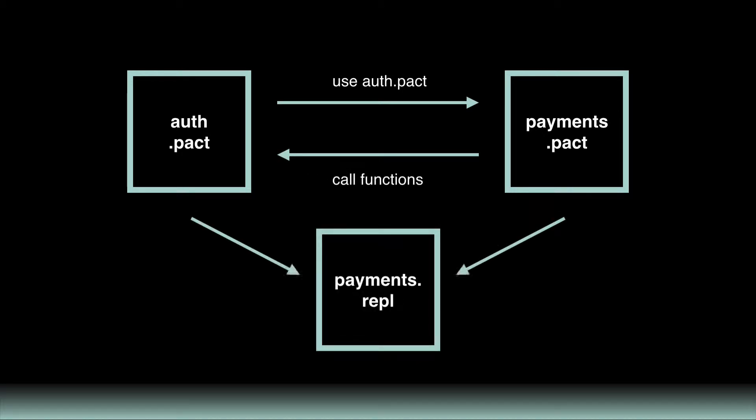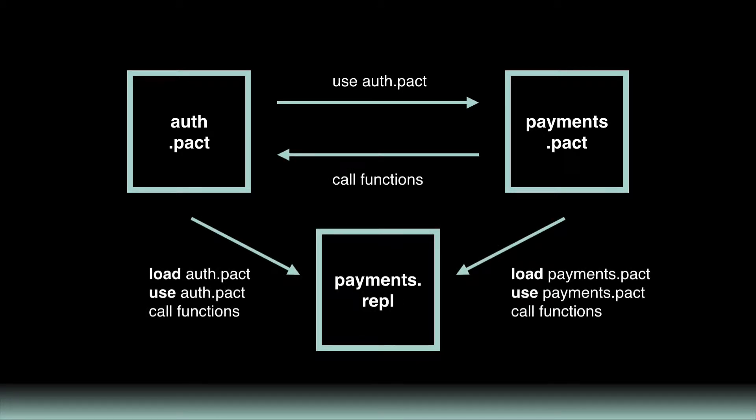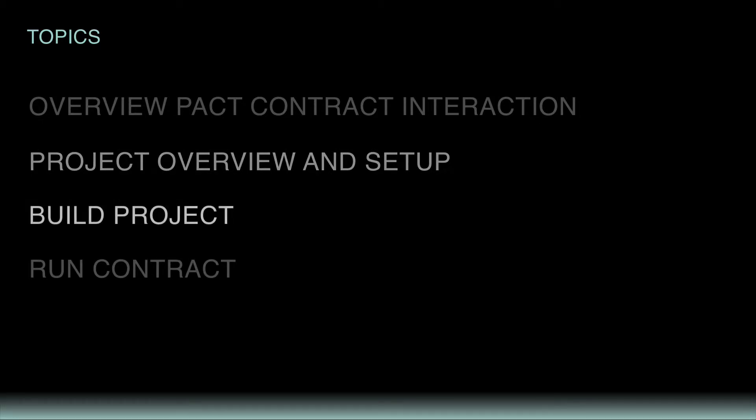Let's get started on the project. Take a look at this visual overview. This provides a summary of each of the features you'll be creating for the Pact Contract Interaction project. Notice how similar it is to the example shown earlier. The goal of this project is to write a function in auth.pact to use within payments.pact. The payments.pact file will then use the auth.pact file to call specific functions. You'll then load the modules from both of these files into the payments.repl file to run the interaction between these contracts. The auth.pact file is responsible for authorizing users, payments.pact for handling payments between users. Don't worry about all the code — just focus on understanding the interactions between the smart contracts.